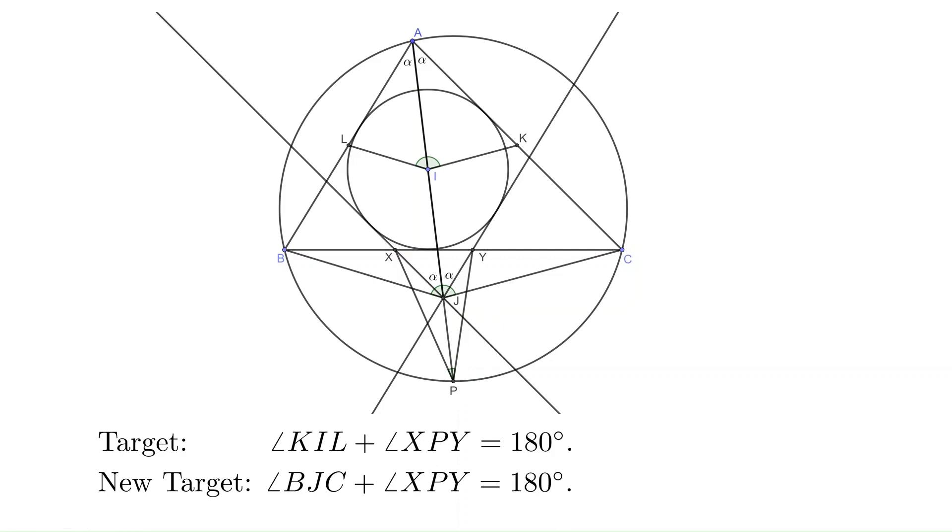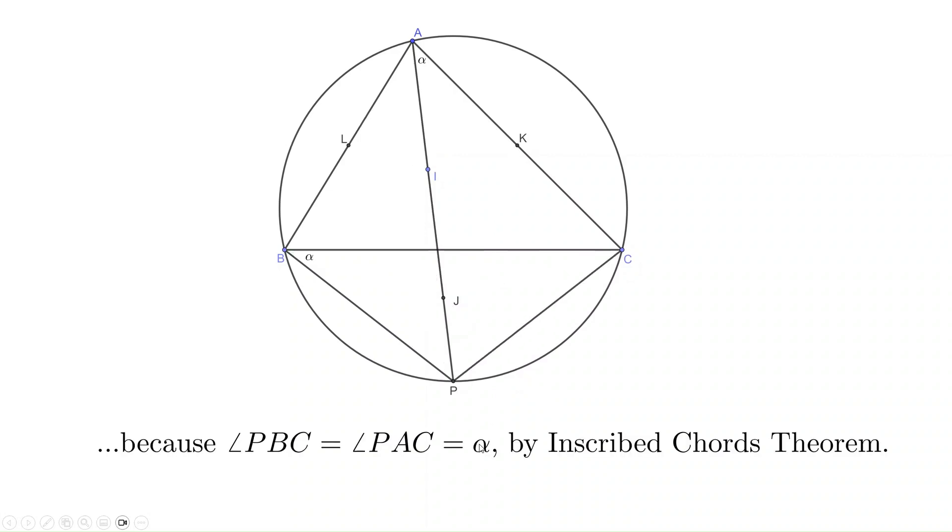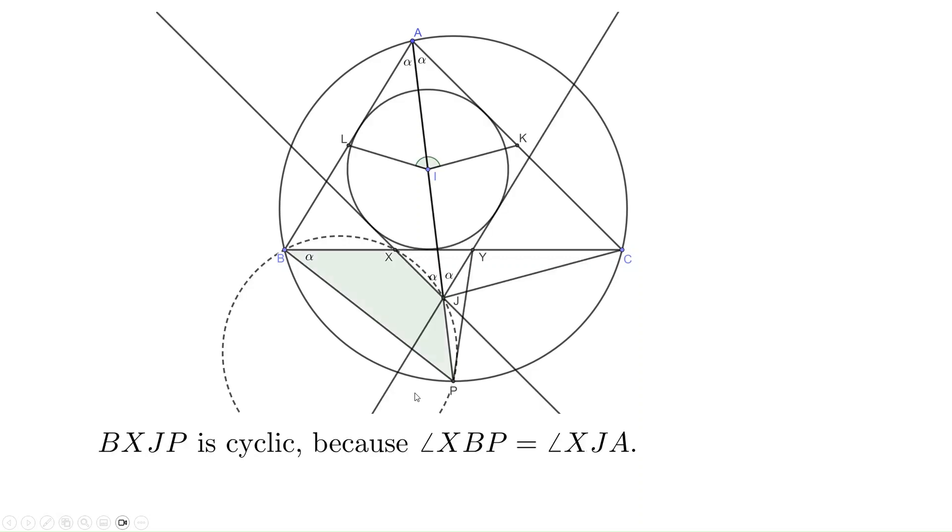This can be done through angle tracing. We claim angle PBC equals alpha. This is because of the inscribed chord theorem: PBC and PAC share the same chord, PC. Therefore, quadrilateral BXJP is cyclic, because angle B is alpha, and at the same time, the opposite side's J exterior angle also has measure alpha.